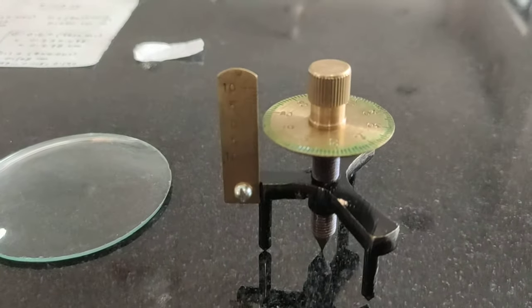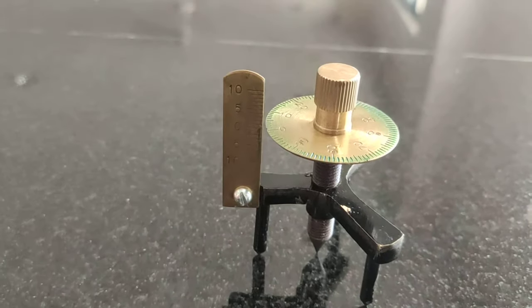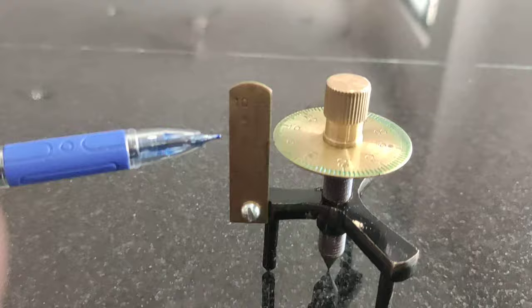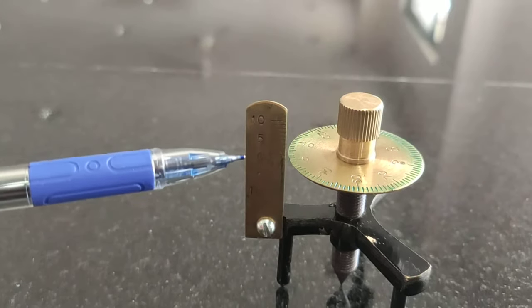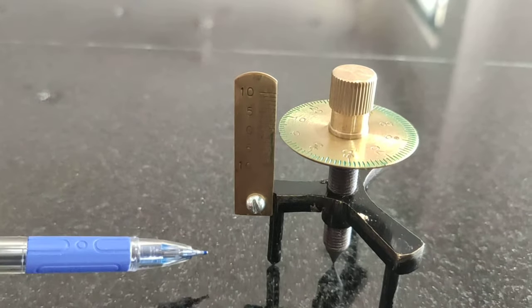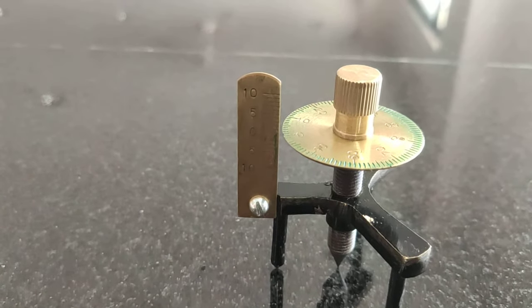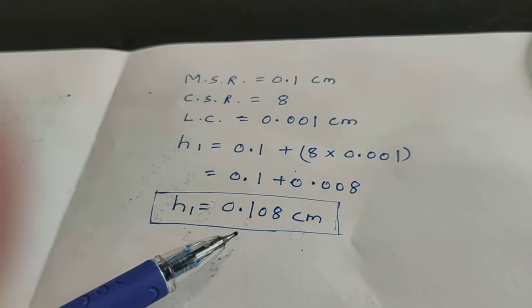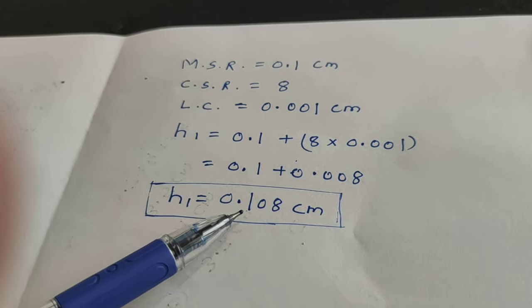The bit of paper is not going through, that means it is in contact. Now take the reading in the same way. First see the main scale. After leveling the central screw, the main scale reading is 0 and the circular scale reading is also 0. The total value of the second reading on the plane surface is 0 cm. In the first case we got 0.108 cm, and on the plane surface 0 cm. The height is the difference between the two numbers, that is 0.108 cm.